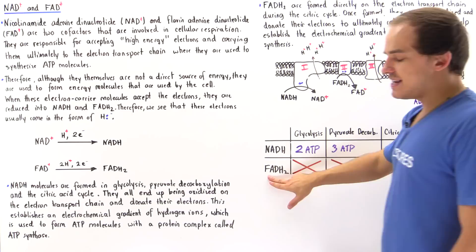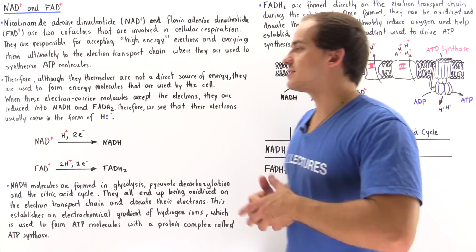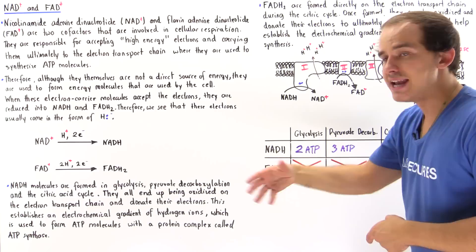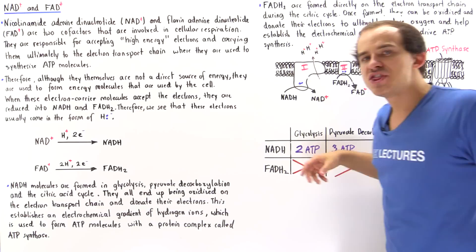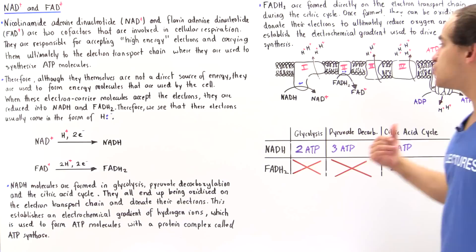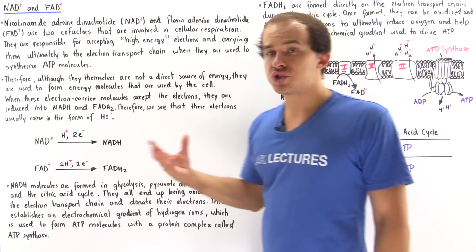FADH2 is not formed in glycolysis or in pyruvate decarboxylation — it is only formed in the citric acid cycle. Specifically, FADH2 is formed directly in protein complex number 2, known as succinate dehydrogenase (succinate oxidoreductase), found on the electron transport chain. FADH2 is then oxidized back into FAD+, releasing its electrons. As these electrons travel through complexes 3 and 4, H+ ions are pumped, creating the electrochemical gradient used by ATP synthase to synthesize ATP.